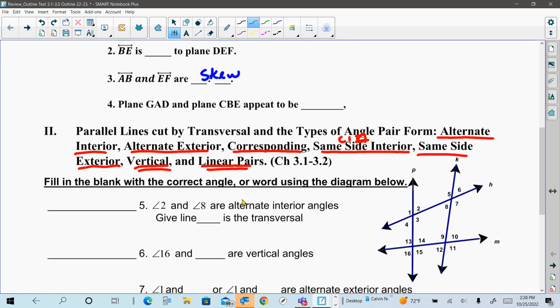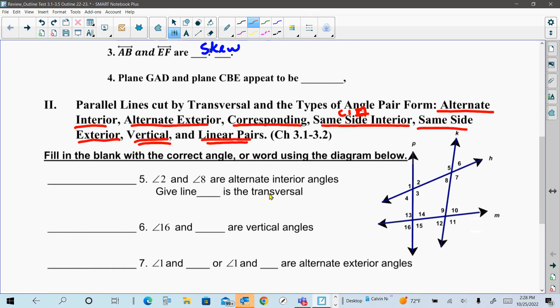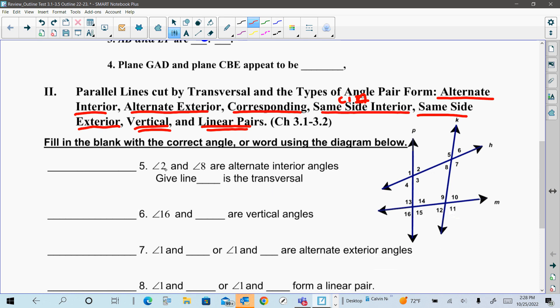So what they want you to recognize is take the given information. They're referring on number 5 to angle 2 and angle 8. What I always tend to do is first find the transversal between the angles to see if they do have a transversal. That is the shared line, which would be line H here. And then compare where they are. Are they on the same side or are they on the opposite sides?